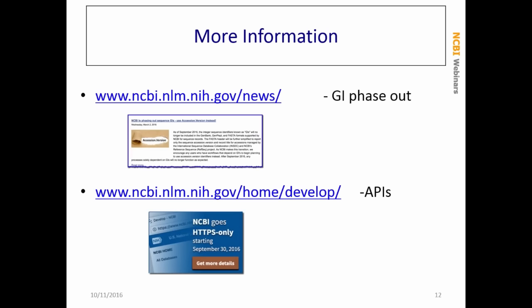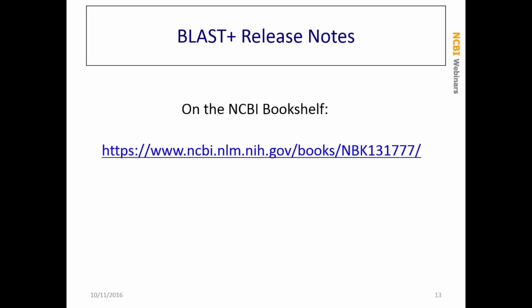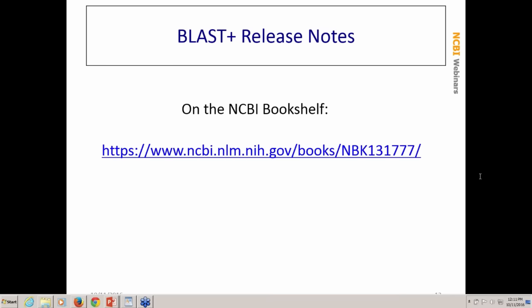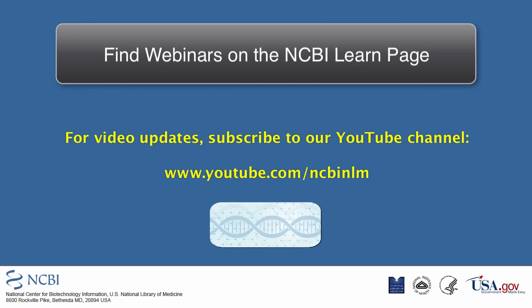A couple of links: go to our news page to find out about the general GI number phase-out, and go to our home page under the Develop section then the API section to read about the switch to HTTPS. For the full discussion of the release notes, go to the NCBI Bookshelf — just search 'NCBI Bookshelf BLAST' and you'll find the release notes written by Christian. We're opening up for questions now. We're not seeing any questions at the moment, so thank you very much and we will see you at the next webinar.